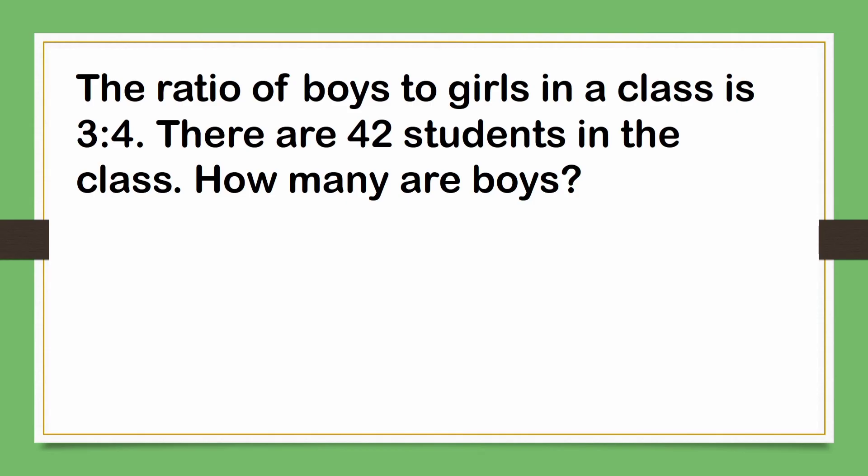The ratio of boys to girls in a class is three is to four. There are forty-two students in the class. How many are boys? Letter A, sixteen. B, eighteen. Letter C, twenty-two. Or Letter D, twenty-four. The answer is Letter B, eighteen.